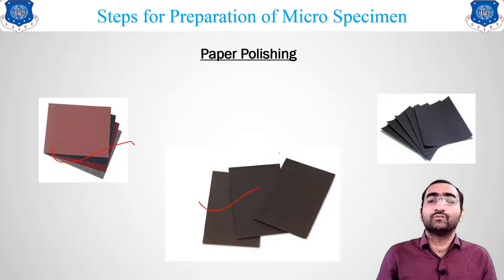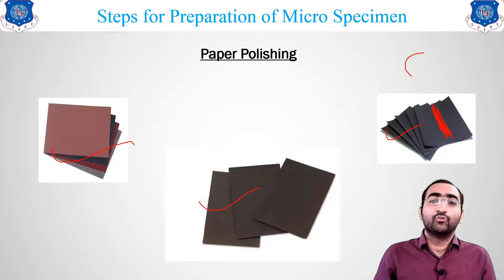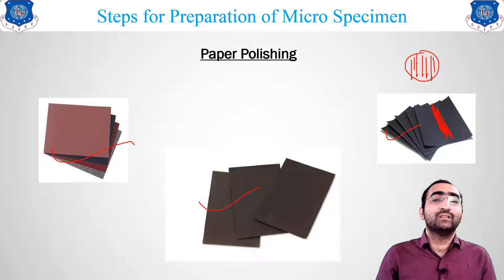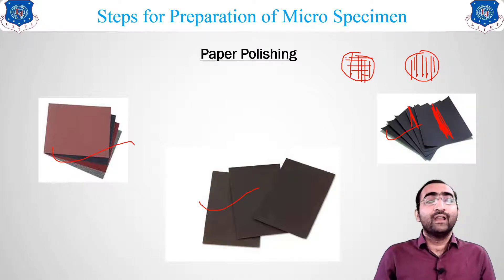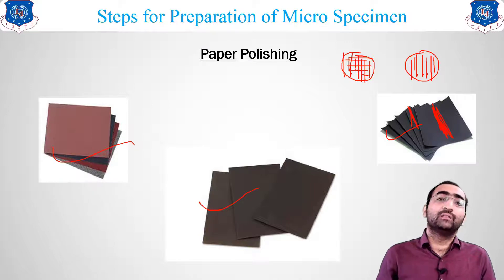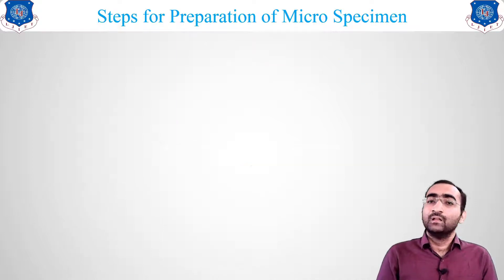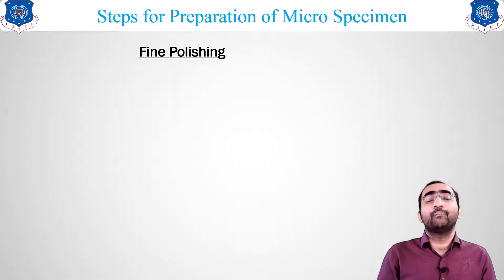We continue from 220 through 400, 600, 800, and up to 1000 emery paper. As we progress from 220 to 1000 the scratch size decreases. Whenever all scratches are in the new direction, we proceed to the next finer grade. This completes our paper polishing step.